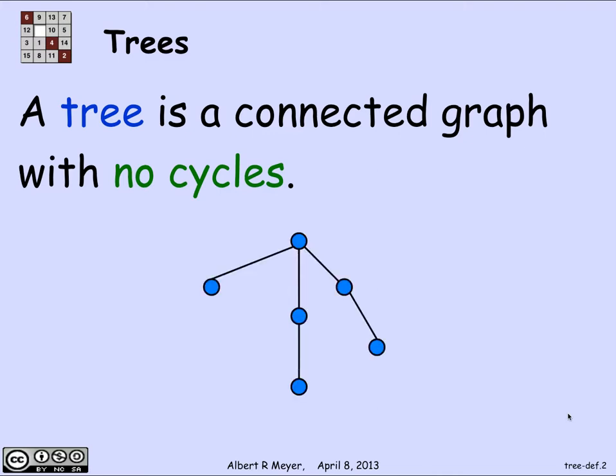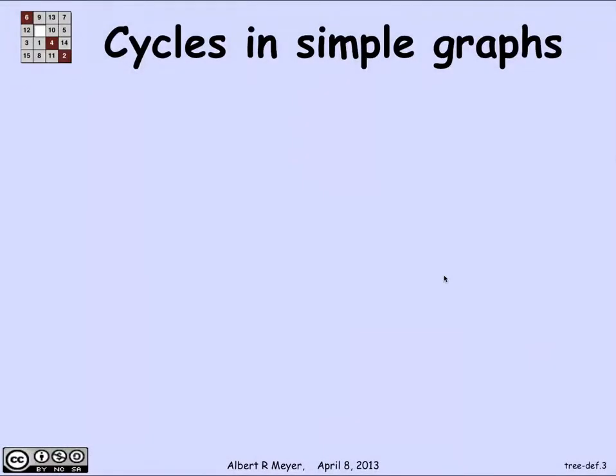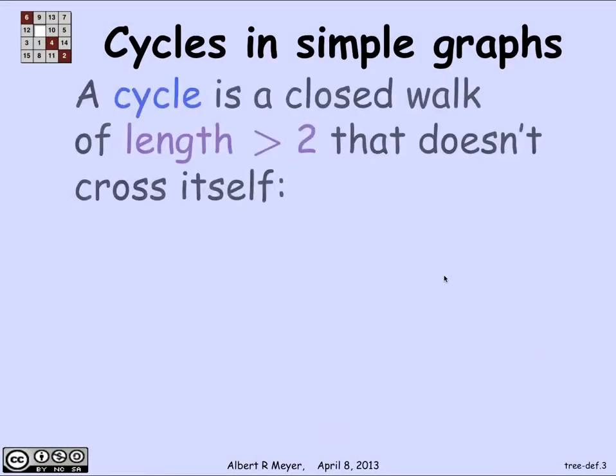In order to make sense out of that we better have a definition of a cycle. There's a picture of a typical tree, but to be precise — what's a cycle in a simple graph? It's a closed walk of length greater than two that doesn't cross itself.